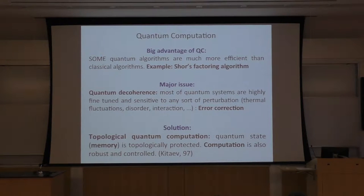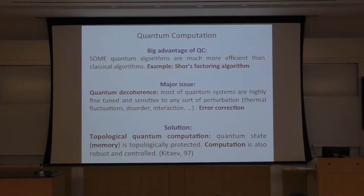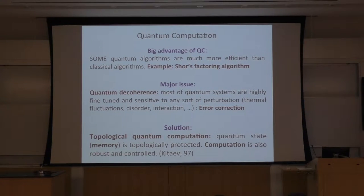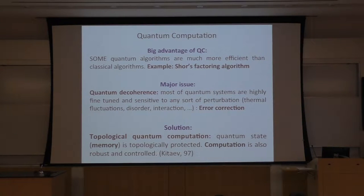But what is so special about a quantum computer? We know that some quantum algorithms are much more efficient than their classical analogs. The most famous example is Shor's algorithm for factoring of large numbers. But the major issue with quantum systems is that they are so fragile and very sensitive to disorder, interaction, and thermal fluctuations, and we don't have much control over them. So this was a big obstacle for making quantum computers.